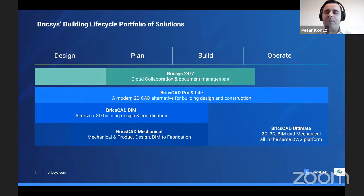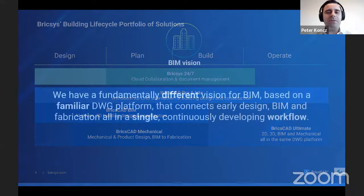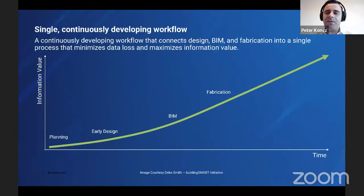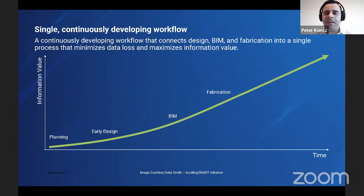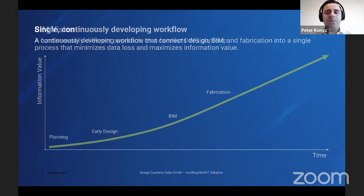BricsCAD 24/7 is a collaboration platform suitable for managing construction projects. Our approach to BIM is unique — it's connected to fabrication directly with BricsCAD Mechanical, all in a familiar DWG platform. This makes a seamless transition from CAD to BIM, lowering the barrier to entry. BricsCAD BIM is especially unique and powerful in combination with parametric design workflows for specific building structures such as scaffolding, curtain walls, and building facades.